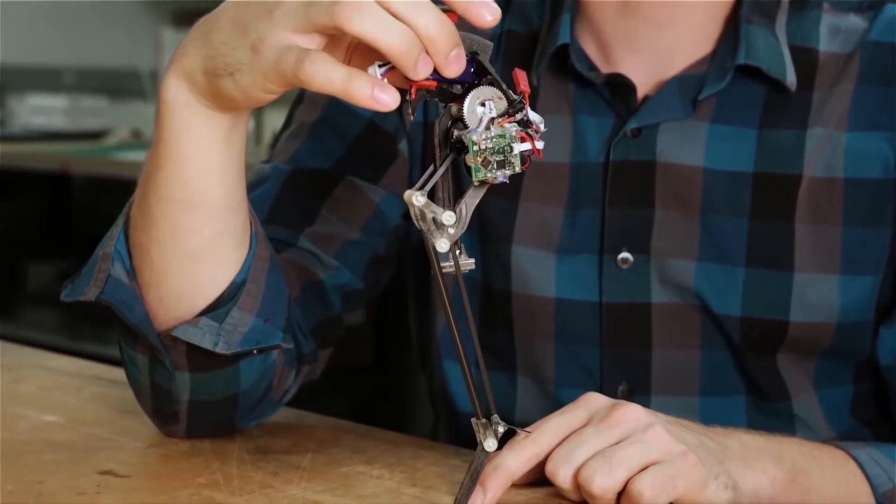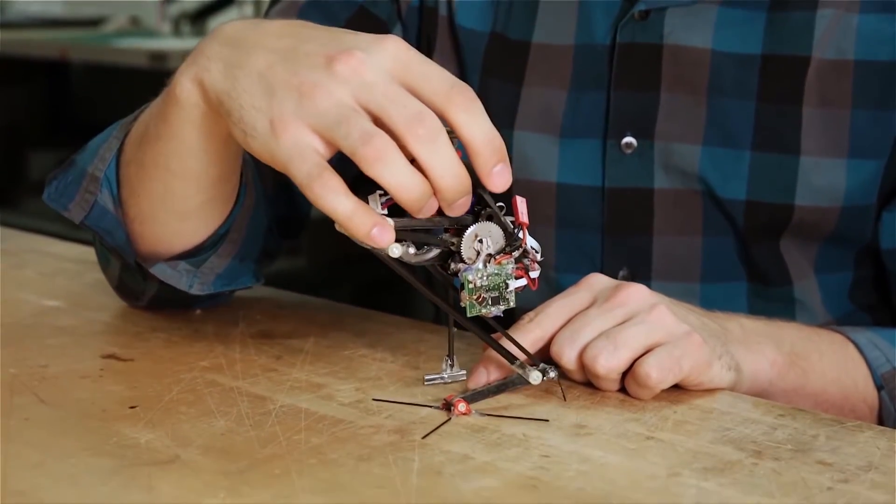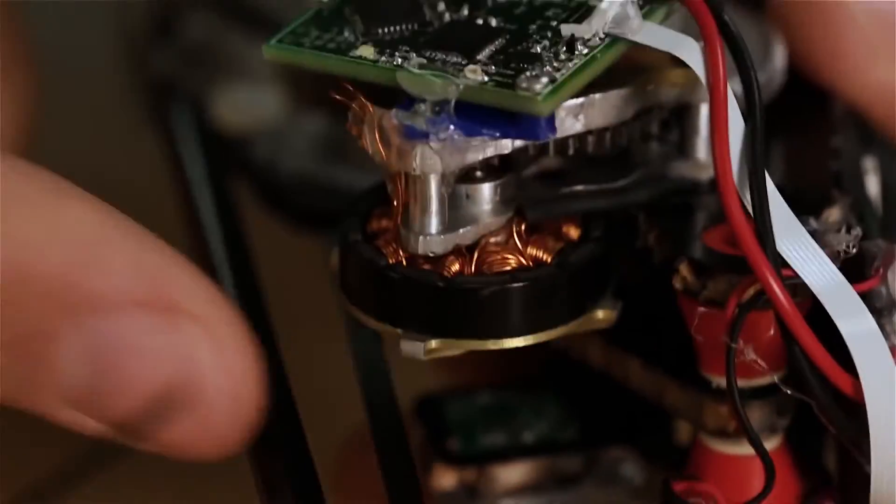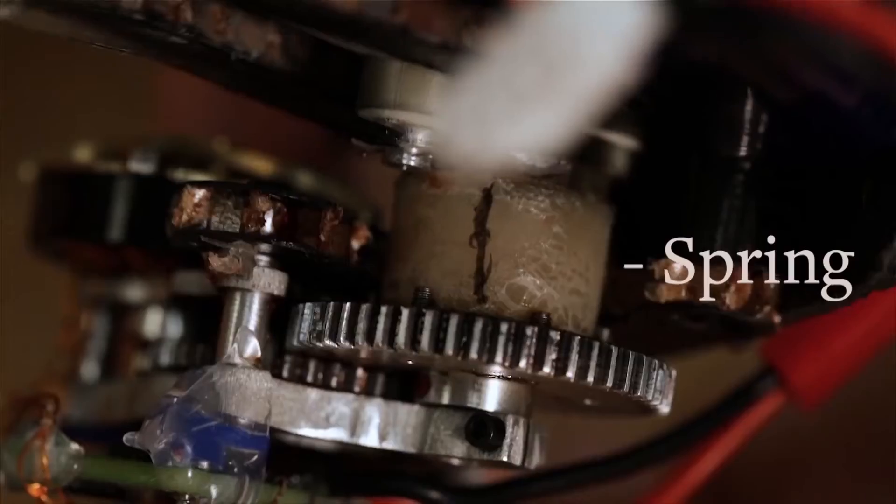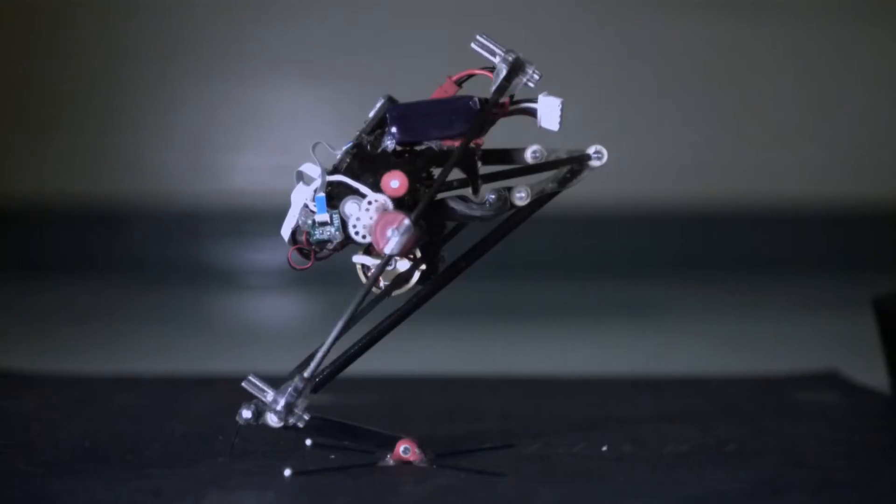So we built into SALTO the capability for a super crouch. What that allows is to have the motor be able to stretch out the spring and keep the robot crouched for longer.